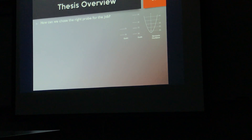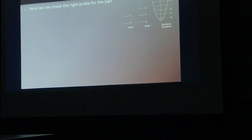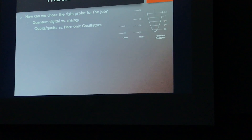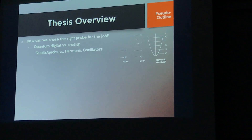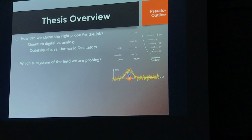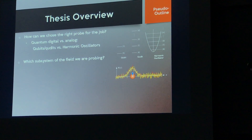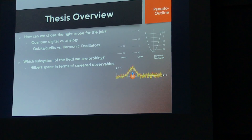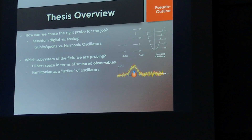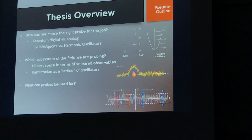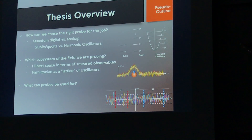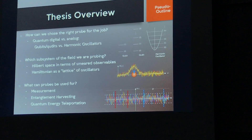Here's an overview of what we're going to cover today — there's a lot of content, just follow my voice if you get lost. We'll start with different types of probes: analog, quantum analog, quantum digital, using qubits and oscillators. Then we'll look at which subspace of the field we are probing when we couple via some local smearing, build the Hilbert space out of smeared observables, express the Hamiltonian in terms of these observables, and apply these tools to measuring subspaces of the field, entanglement harvesting, and quantum energy teleportation.